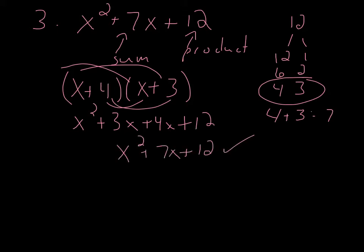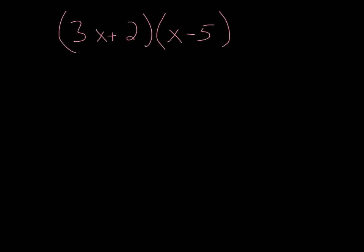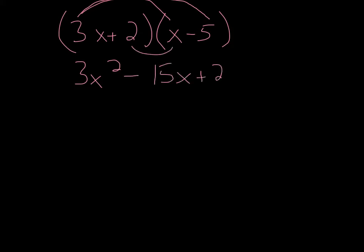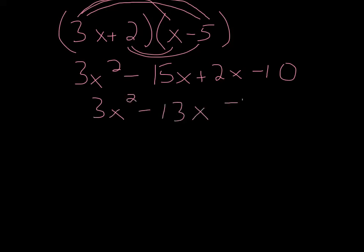Let's move on to examples where the leading coefficient is no longer just 1. Let's see how this works out when multiplying using FOIL. When we see those first two terms, we get 3x². When the 3x multiplies by −5, we actually get −15x, plus 2x, minus 10. So we get 3x² − 13x − 10. Notice how the interaction between the 3 and the −5 worked out.